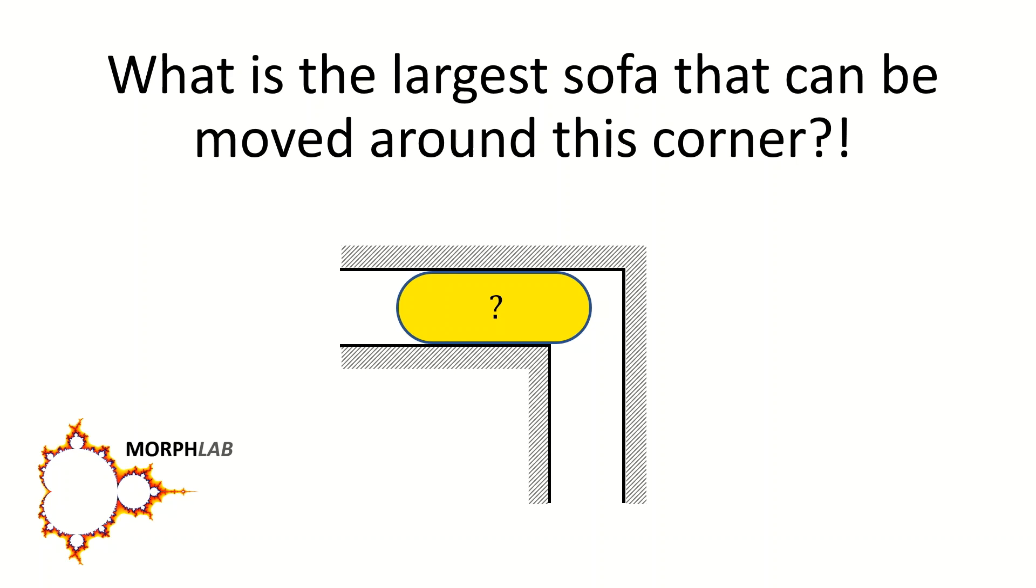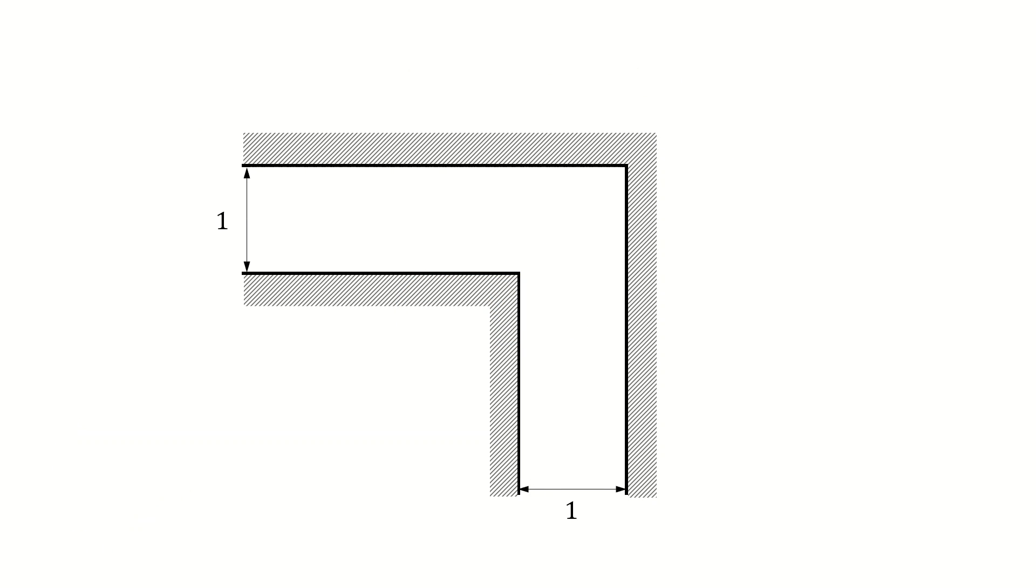We want to find the shape of the largest sofa, that is by area, that can be turned around the corner like the one shown here. Let's assume that the width of the corridor is one meter or one unit and we want to find the area of the largest sofa that can turn around the corner.